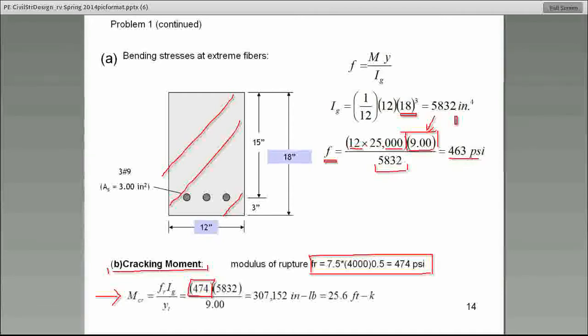By the way, guys, I think there is an issue here. I need everybody's attention. This is 4,000, not 4,000 times 0.5. That's 4,000 to the power of 0.5.